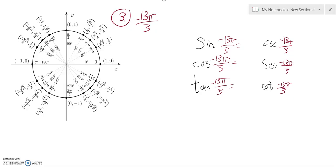This is Math 142, practice test number one. Question number three, we're supposed to find exact values for negative 13 pi over 3.